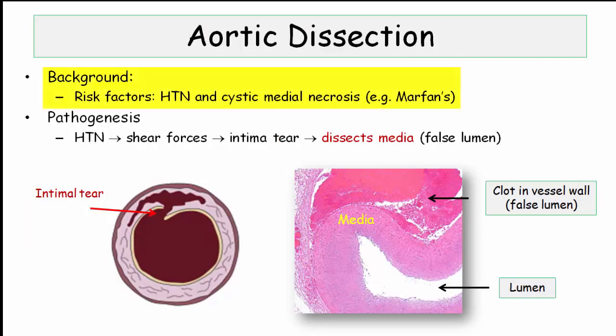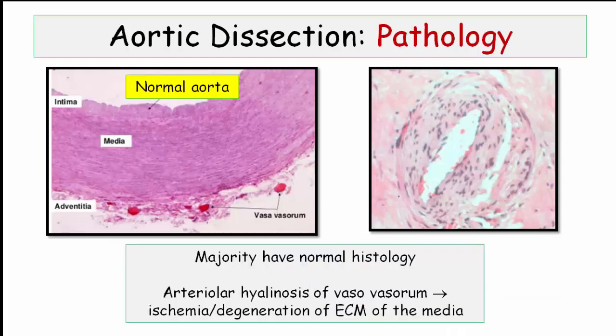So as we just mentioned, the key risk factor for dissection is hypertension. The other subgroup will be those patients who are genetically predisposed to the pathologic lesion of cystic medial necrosis — Marfan's is an example, but other conditions can also cause this lesion. Insofar as pathogenesis, it is thought that the shear forces associated with hypertension initiate a tear in the intima, as depicted in the left graphic. Once torn and under high systemic pressures, blood literally tears or dissects through the laminar planes of the media layer.